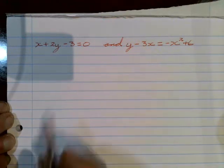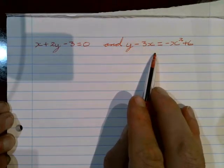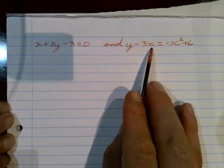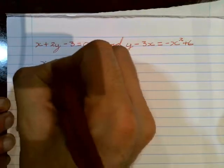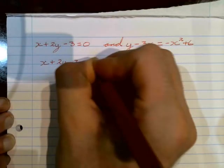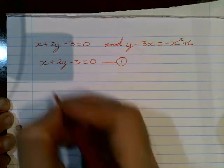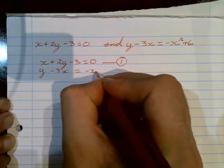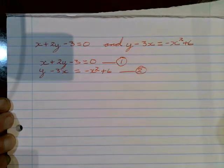When solving simultaneous equations, you will always be given two equations — equation one and equation two — and those two equations have got two variables, a y and an x, that you have to find the values for. To start off any simultaneous equation, we want to rewrite our equations and name them using a simple number with a circle around it, so that's equation number one and equation number two. That just makes it easier to keep track of which equation we're working with.